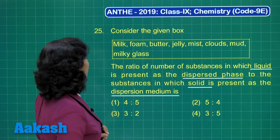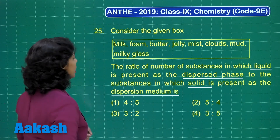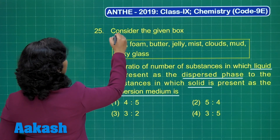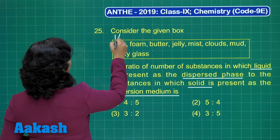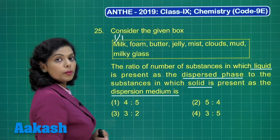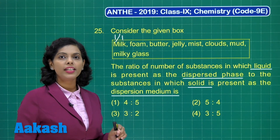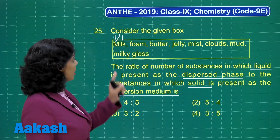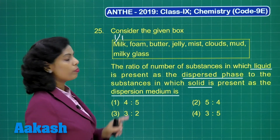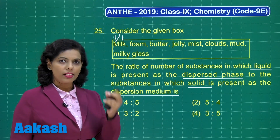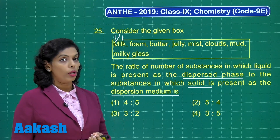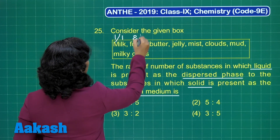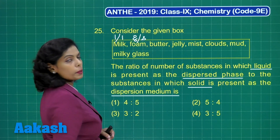First of all we have milk. Milk is an emulsion — in milk there is liquid present in liquid, meaning liquid is the dispersed phase and liquid is also the dispersion medium. Similarly, foam is another colloid, and in the case of foam there is gas present in solid.